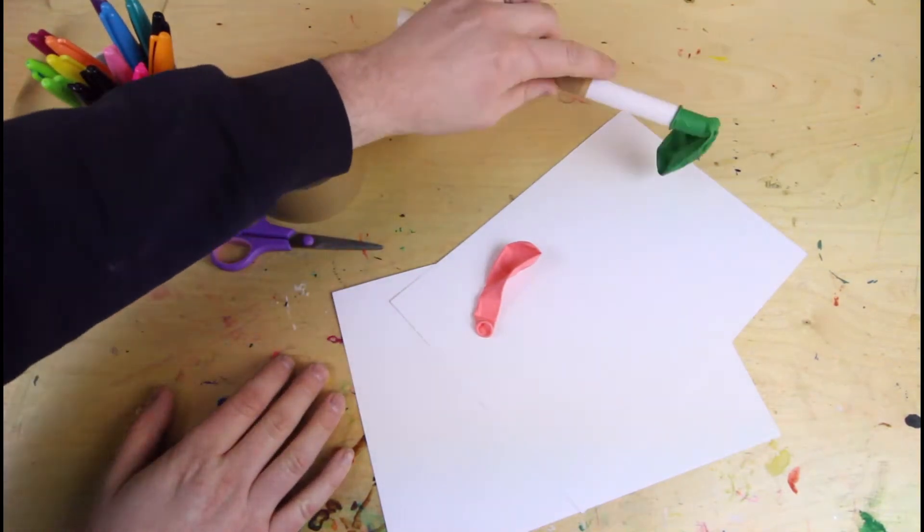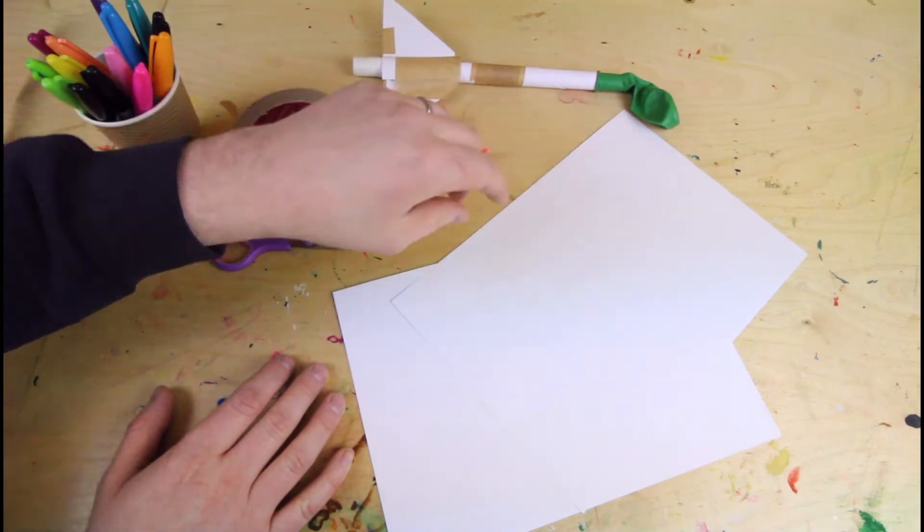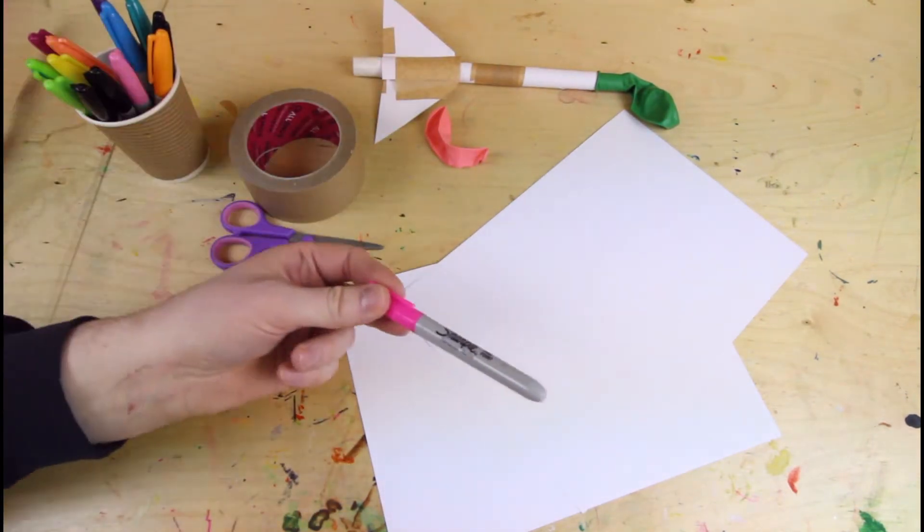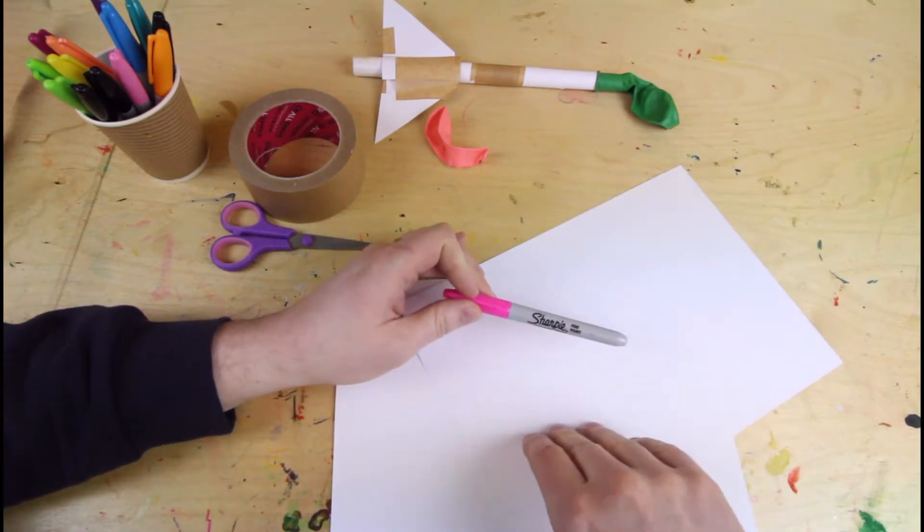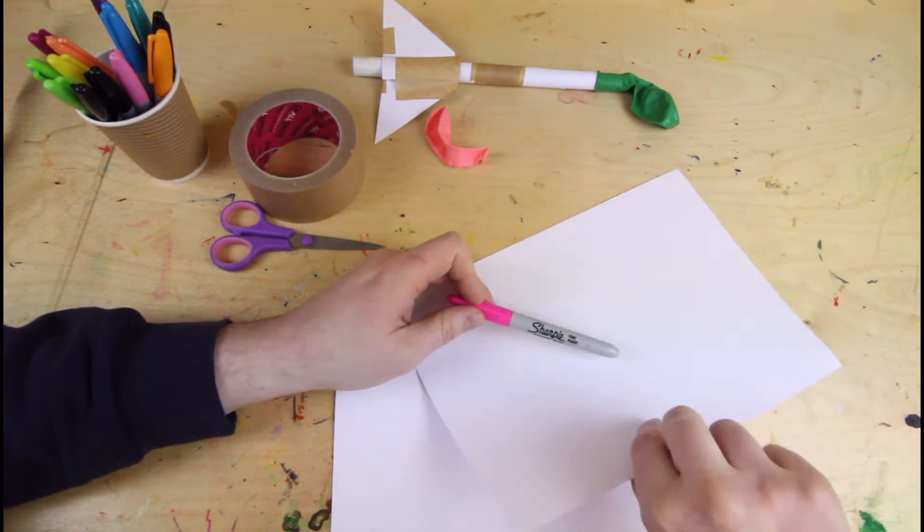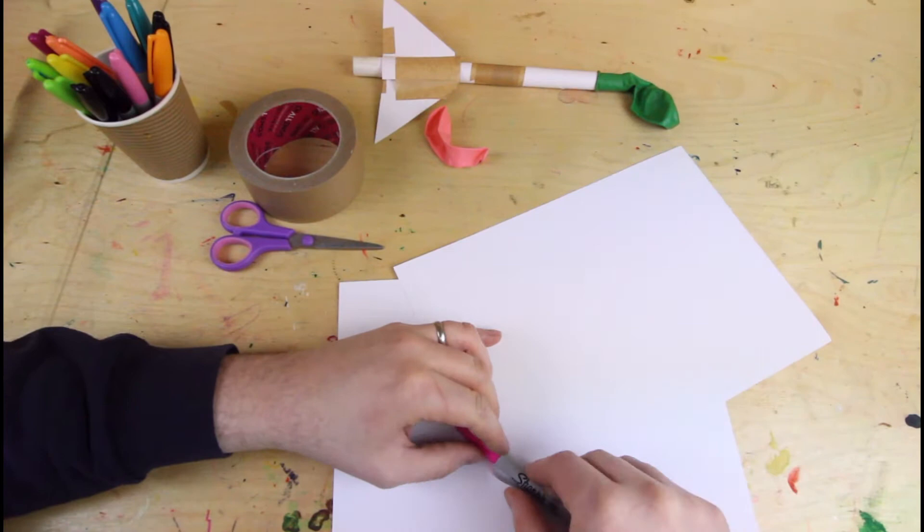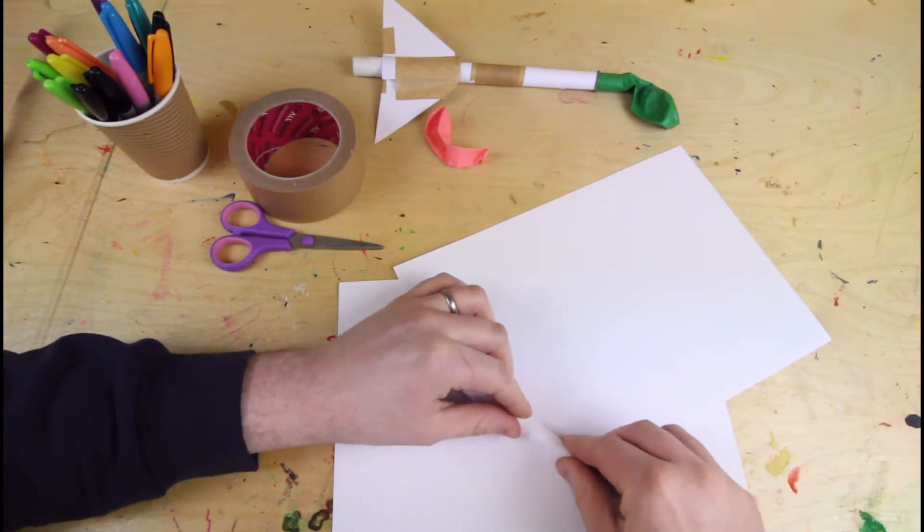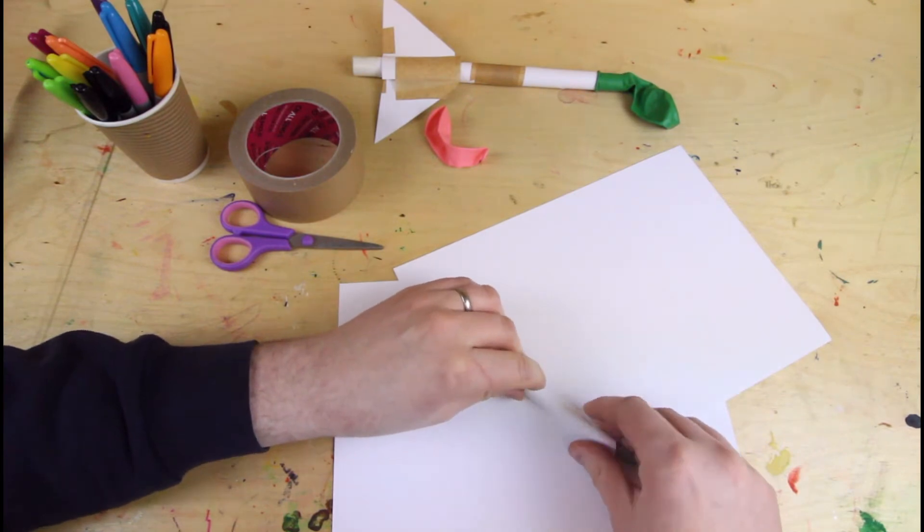You're going to start by making the tube. So you're going to find something that's round and the right sort of length, so a pen's quite good. What you do is you just take it from one corner to the next and then just roll it up around the pen or whatever you're using.